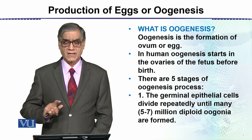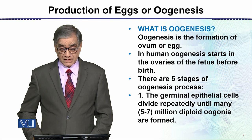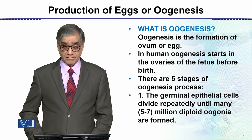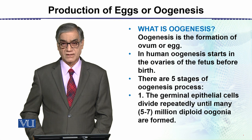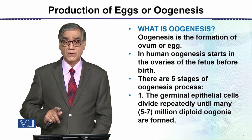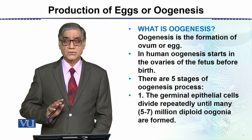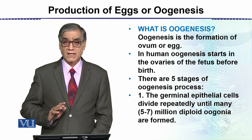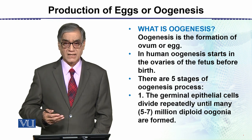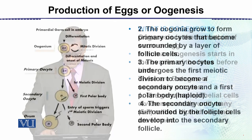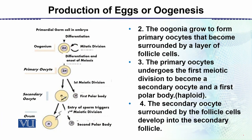The first stage: the germinal epithelium cells divide repeatedly until five to seven million diploid oogonia are formed. There are a large number of cells whose program is set for egg formation.